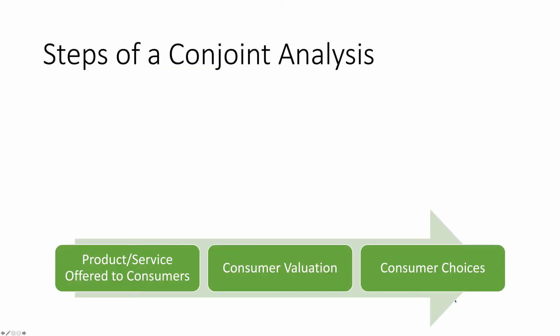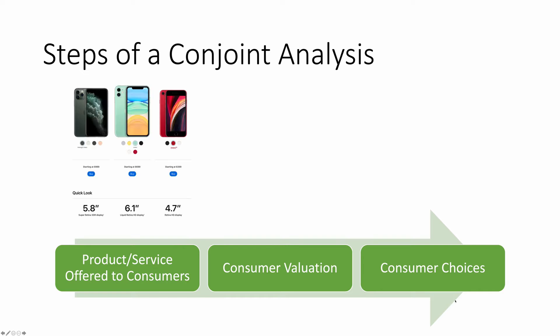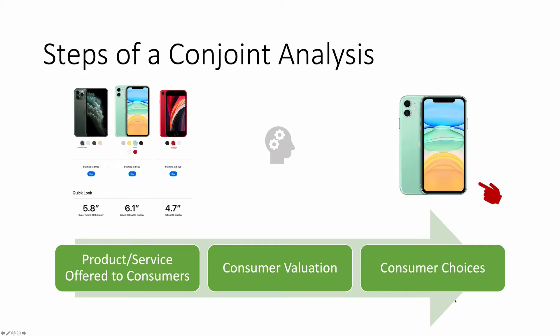So here are the steps of a conjoint analysis. First, we offer consumers a set of products or services and ask them to make a choice. Here I'm showing consumers three different iPhones and asking them to make choices. As you can tell, these iPhones have different attributes or features — a different number of cameras, different prices, and different screen sizes. Then this part we don't observe is consumers are going to evaluate these options, and then we ask consumers to tell us what they choose out of the three options. That's the experimental part of a conjoint analysis.